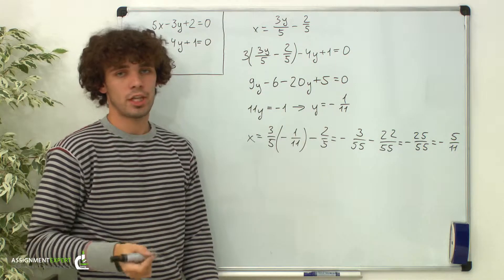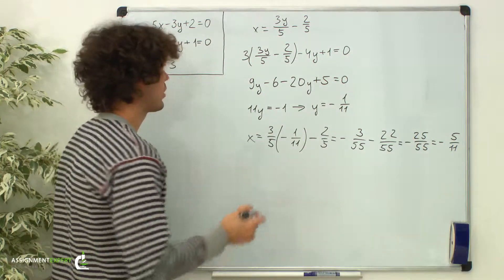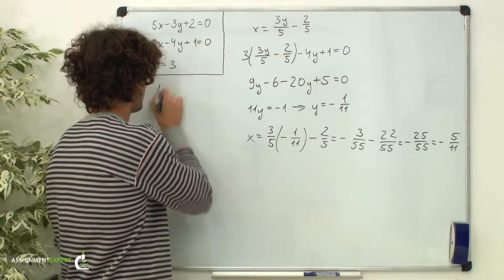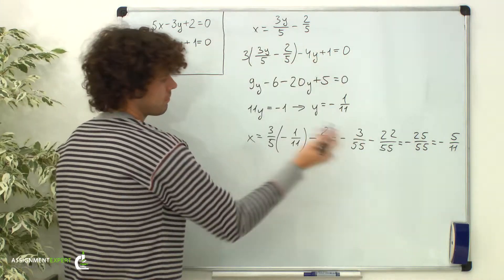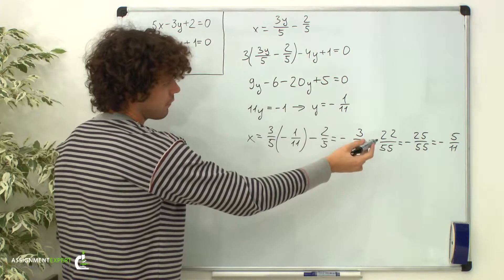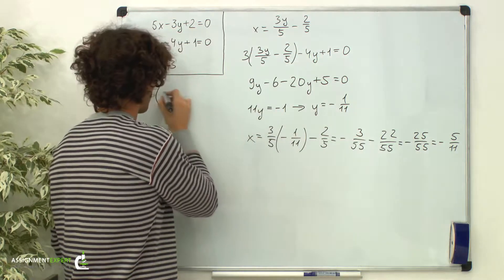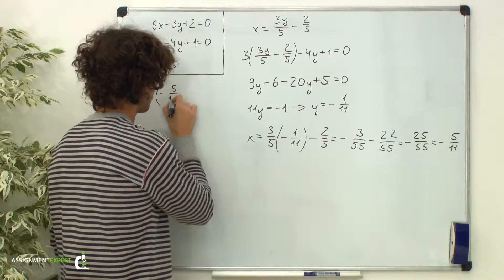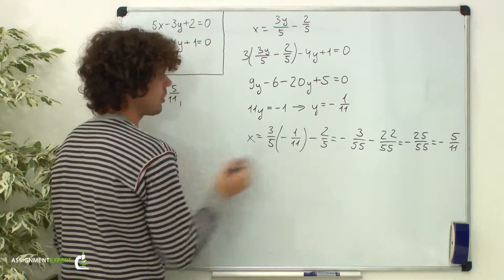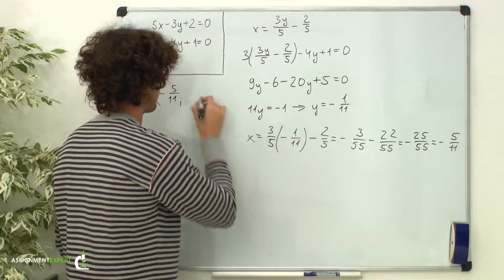So we find the intersection point. It has coordinates negative 5/11, negative 1/11.